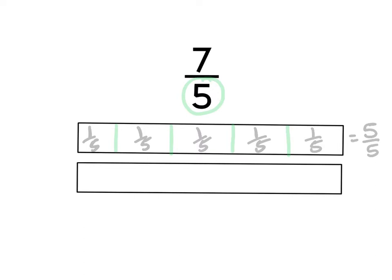So here's my model. I know that 5 fifths is 1 whole, but the question is, how many more fifths do I need to get 7 fifths?